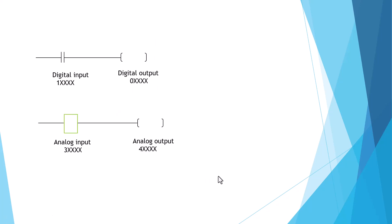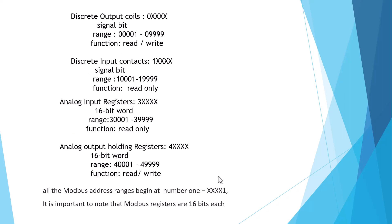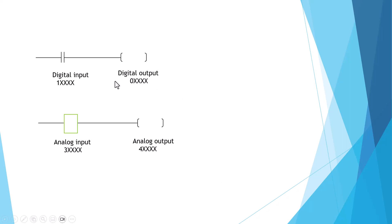If you have difficulty remembering, here is a simple tip using PLC addressing. Discrete output uses zero. Discrete input uses one. Analog input register uses three. Analog output holding register uses four. So just remember: zero, one, three, four. It is simple and easy to remember.